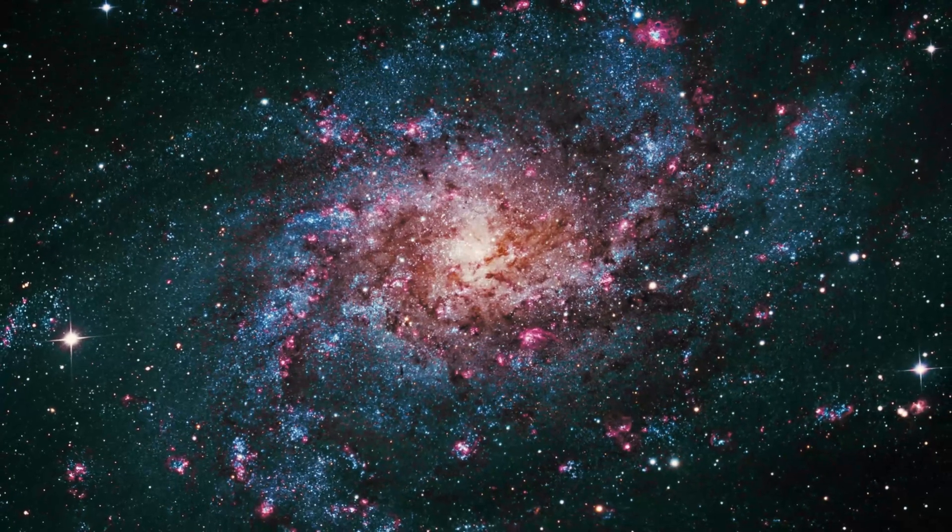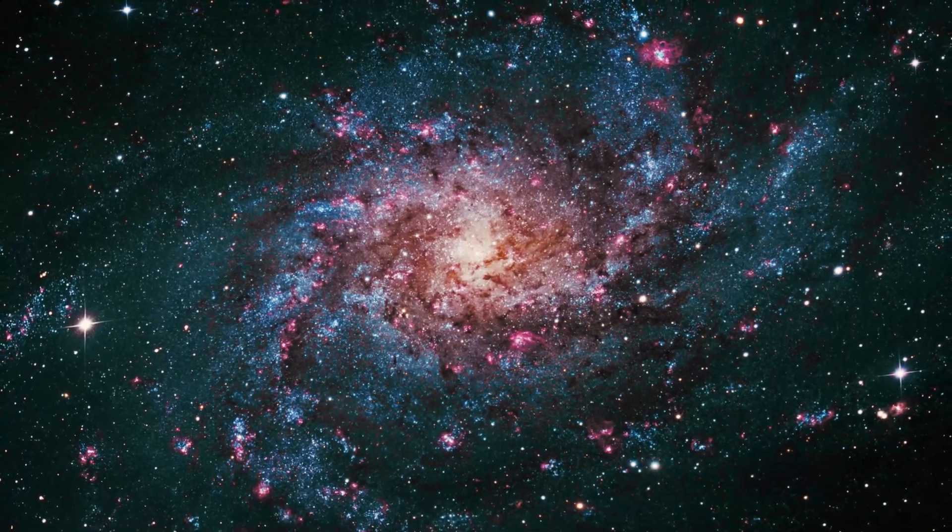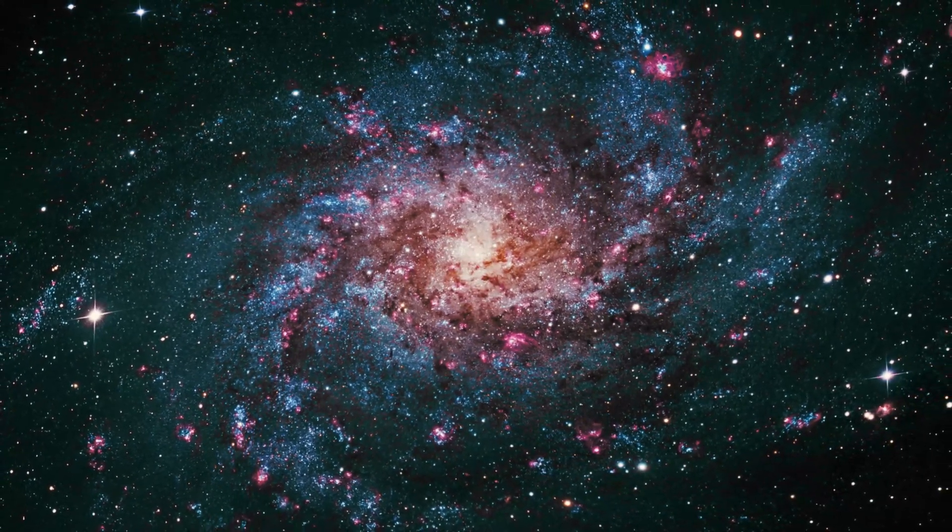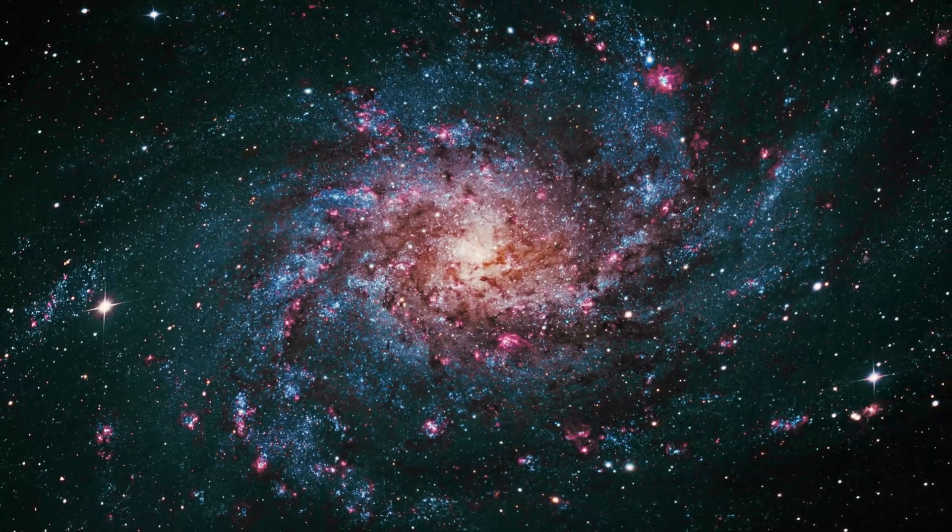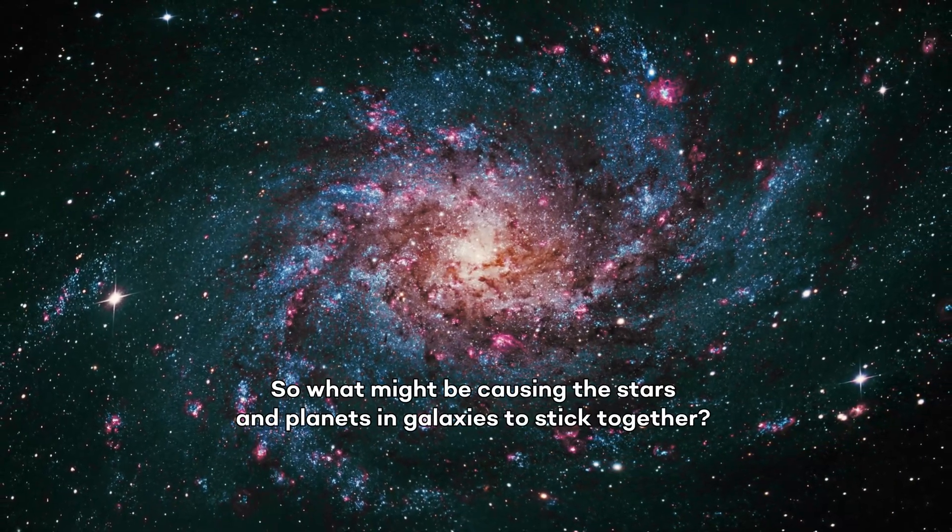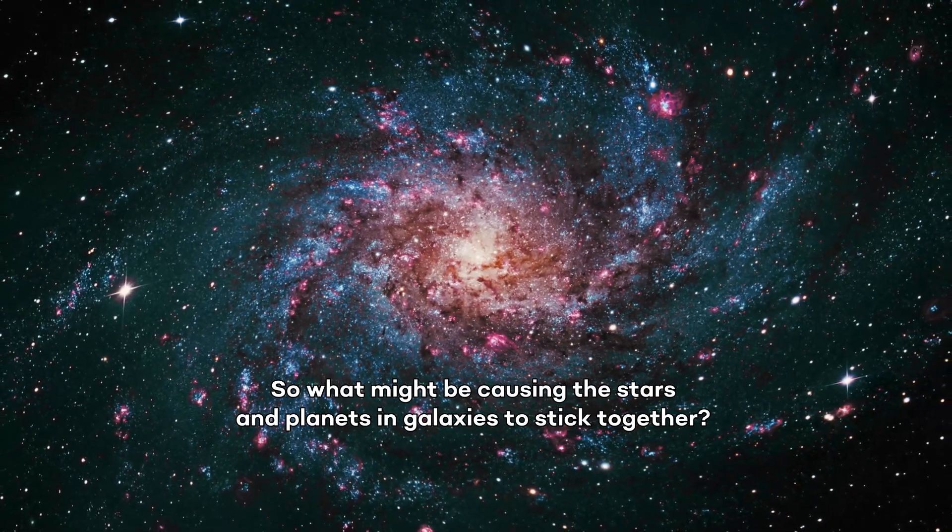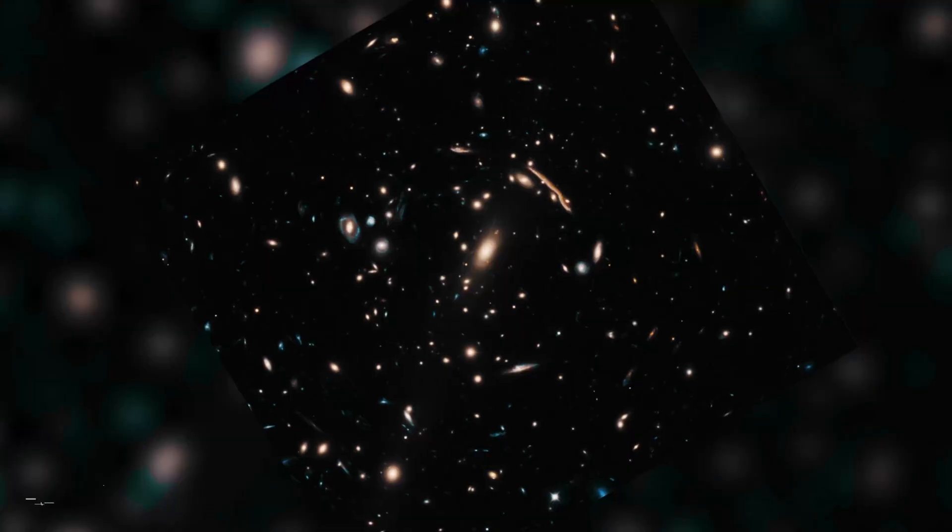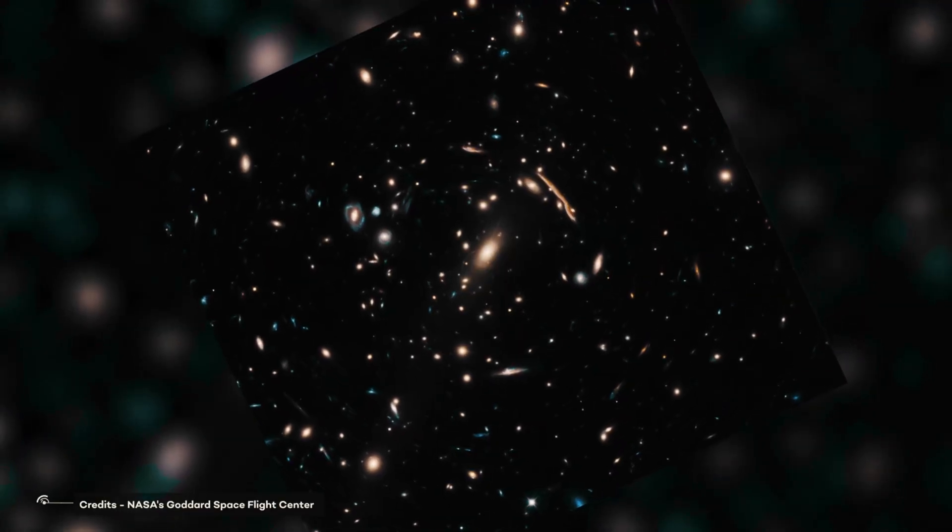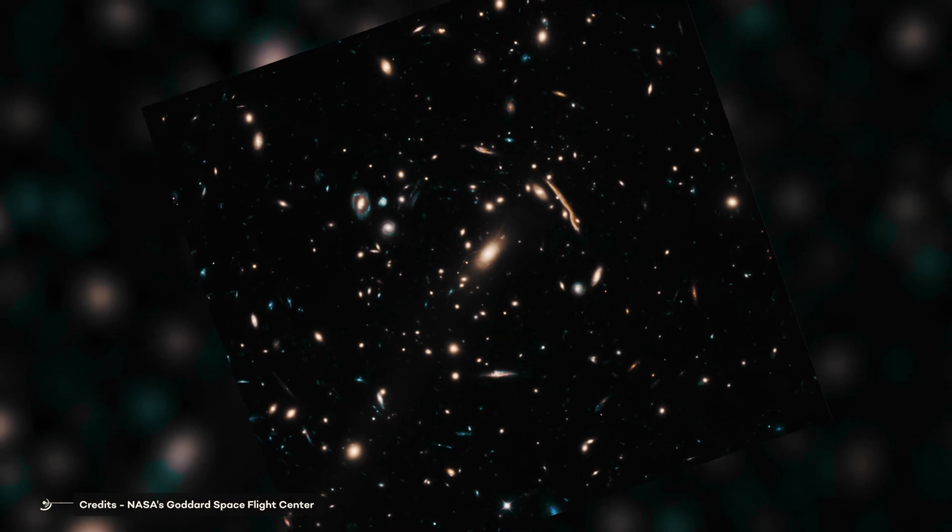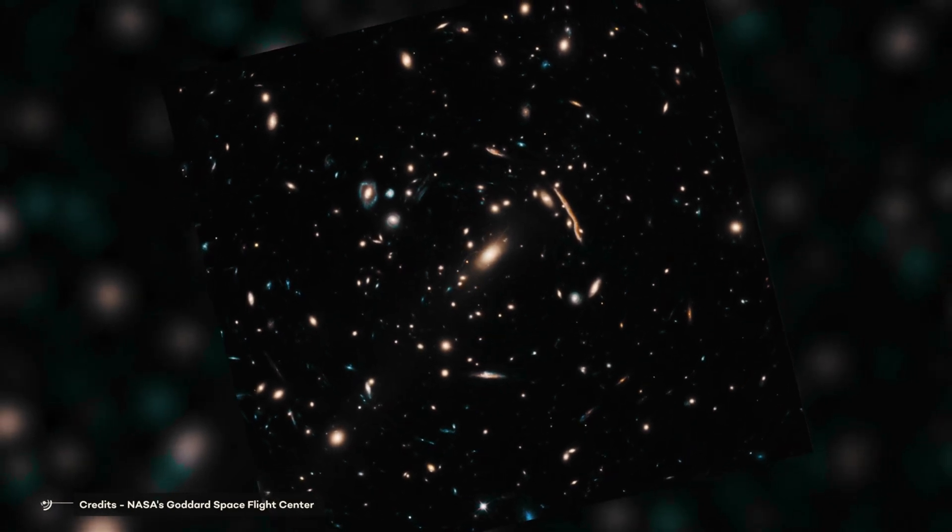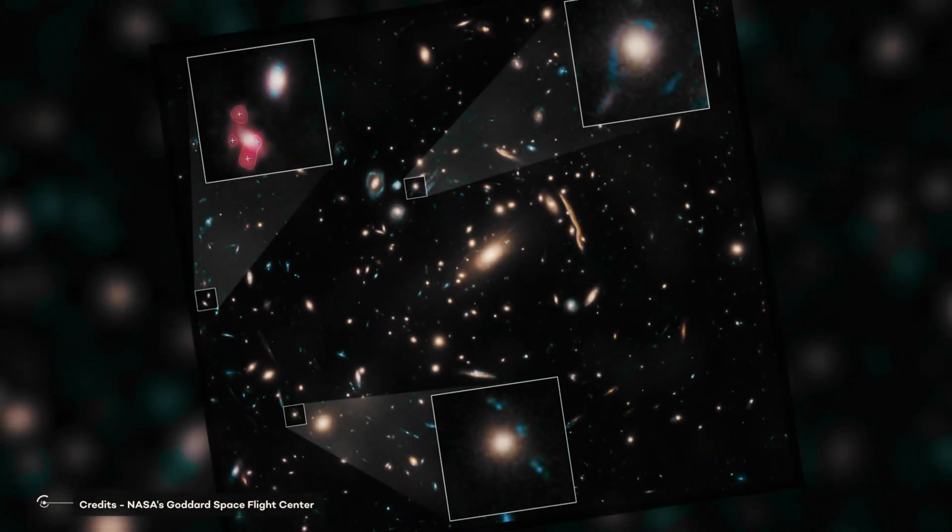The same happens at the largest of scales. We find the same story everywhere we look. There isn't enough matter to account for the gravitational effects that we observe. So what might be causing the stars and planets and galaxies to stick together? To answer this, scientists came up with the term dark matter. Dark because we cannot see it, we are just able to observe its effects.